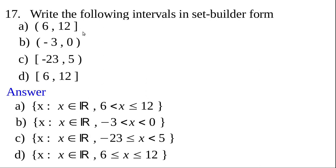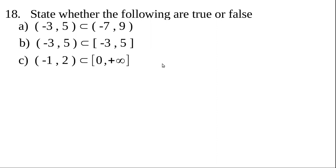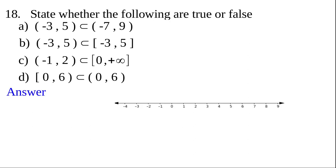Question 18: State whether the following statements are true or false. Part A: Is open interval (−3, 5) a subset of open interval (−7, 9)? True — (−3, 5) contains numbers from minus three to five, and (−7, 9) contains numbers from minus seven to nine, so every element of (−3, 5) is clearly in (−7, 9).